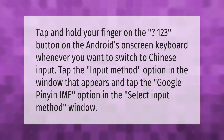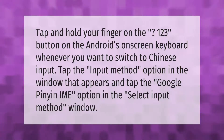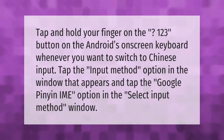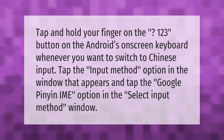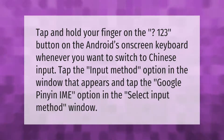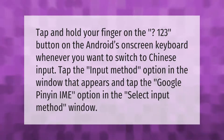Tap and hold your finger on the '123' button on the Android on-screen keyboard whenever you want to switch to Chinese input. Tap the 'Input method' option in the window that appears, and tap the Google Pinyin option in the 'Select input method' window.